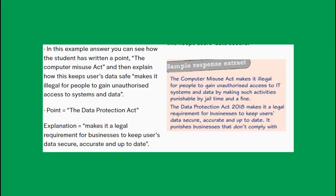I'll put an example answer on the screen right now — just take about 30 seconds to read it quickly. You can see the structure the student has used. The first point is the Computer Misuse Act, and then it's explained by saying that it makes it illegal for people to gain unauthorized access to systems and data. The next point is the Data Protection Act, and the explanation is that it makes it a legal requirement for businesses to keep user data secure, accurate and up to date.